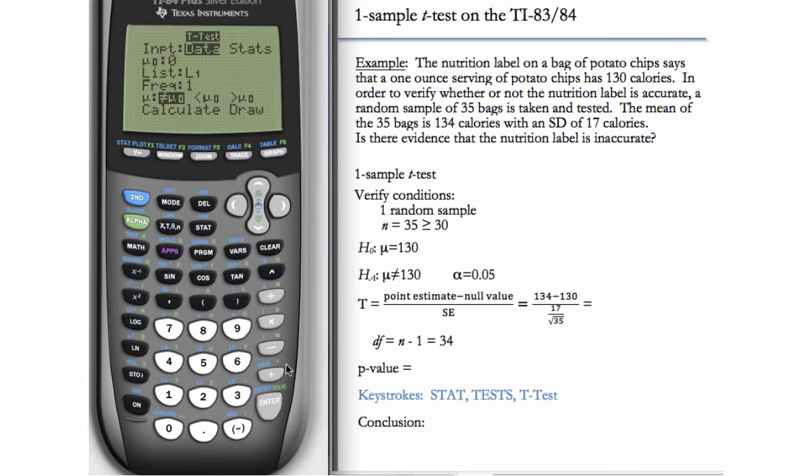But in this case, we have stats. So we're going to go over to Stats and hit enter. And you see that the screen changes a little. Now it wants to know the mean and standard deviation of your sample. So first we need mu sub 0. The sub 0 corresponds to this sub 0. This is the null value or the hypothesized value of mu. So our hypothesized mean is 130. So we'll enter 130.